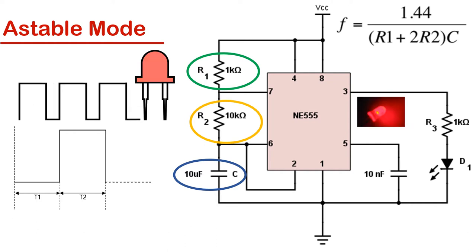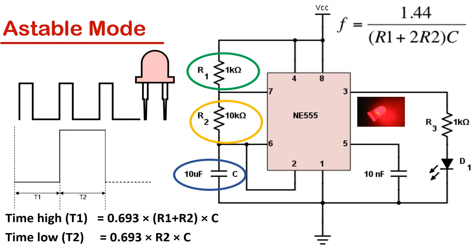Output high and output low duration is determined by the resistors R1 and R2 and capacitor C. On time, off time, and frequency can be calculated using these formulas.